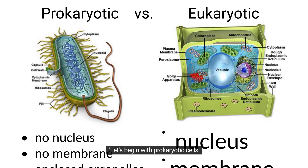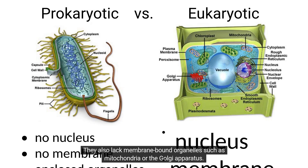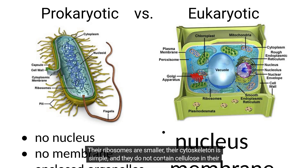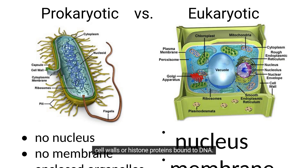Let's begin with prokaryotic cells. Prokaryotes have no nucleus, meaning their DNA is not enclosed. They also lack membrane-bound organelles such as mitochondria or the Golgi apparatus. Their DNA is typically a single chromosome and their cytoplasm shows no streaming movement. Cell division occurs without mitosis and they usually have simple flagella for movement. Their ribosomes are smaller, their cytoskeleton is simple, and they do not contain cellulose in their cell walls or histone proteins bound to DNA.